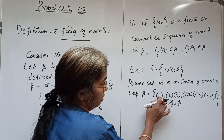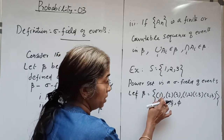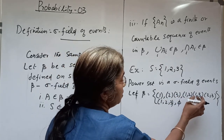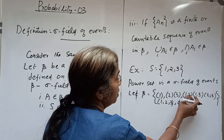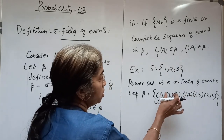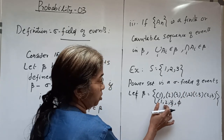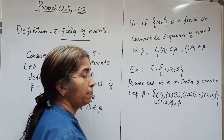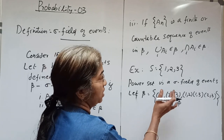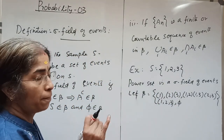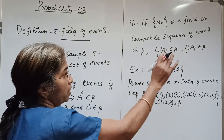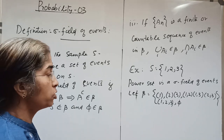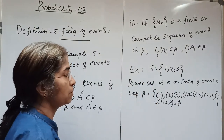For event {1}, its complement {2,3} belongs to beta; for {2}, its complement {1,3} belongs to beta; for {3}, its complement {1,2} belongs to beta. The union {1}∪{2}∪{3} = {1,2,3} belongs to beta, and the intersection is the empty set which also belongs to beta. So the power set is a sigma field of events, since complementation, union, and intersection all remain within beta.